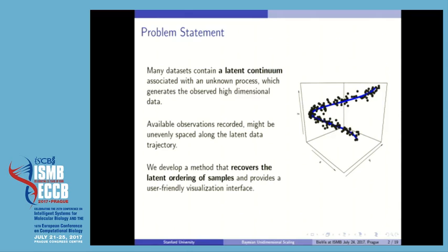The observations might be recorded not evenly spaced along this latent one-dimensional manifold. Our task is to recover this latent ordering of the samples, provide some estimate for the uncertainties of these estimates, and generate user-friendly and efficient ways of visualizing that ordering and the uncertainties in the data.